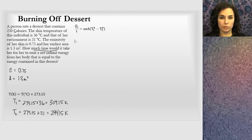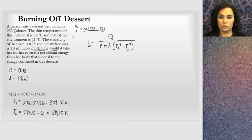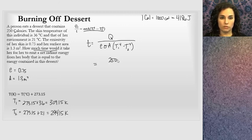They want us to solve for how much time. I'm going to algebraically solve this equation for T. If I multiply by T on both sides and divide by this expression on both sides, that will give me the equation. T will equal Q divided by E sigma A T1 to the fourth minus T2 to the fourth power. The heat transferred will be the amount of energy in the dessert. I'm given 250 big C calories. I'm going to note that one big C calorie is 1,000 little C calories, and each little C calorie is 4.186 joules. So 1,000 little C calories is 4,186 joules. Q will be 250 big C calories, and I'm going to multiply by 4,186 joules for one big C calorie.